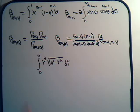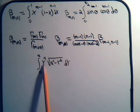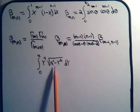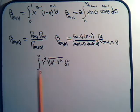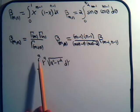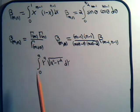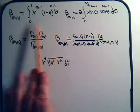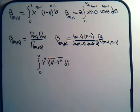Here we have the integral of y to the 4th times the square root of a squared minus y squared, going from y equals 0 to a. And comparing that to our definition of a beta function, it seems like it's a far cry from our beta function.